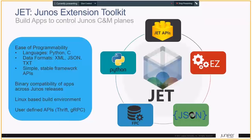JET — the Junos Extension Toolkit — supports application development in C and Python. This is a way of providing or writing external applications that take advantage of the programmability of Junos through all-standard interfaces. You can write applications in Python, C, or other languages that support the XML and JSON interface. You exercise the APIs on the Junos box, and the applications will operate over upgraded versions of the Junos operating system — so as you go from release 16 to 17, your applications don't have to be redesigned every time.